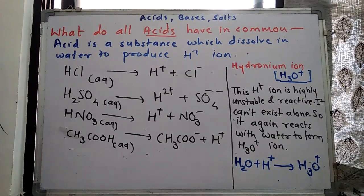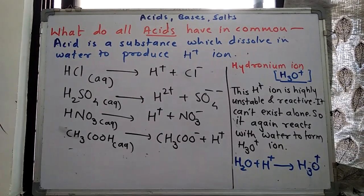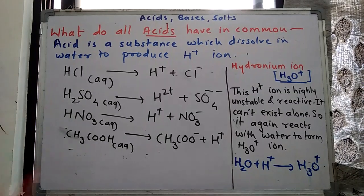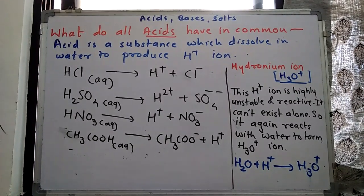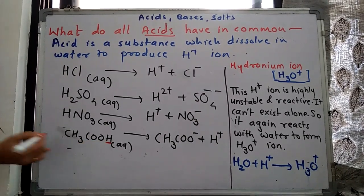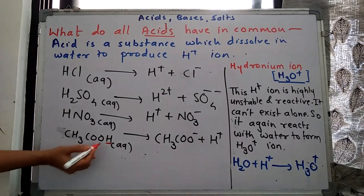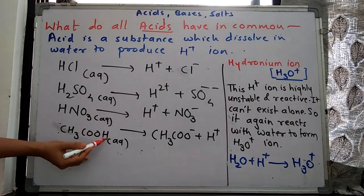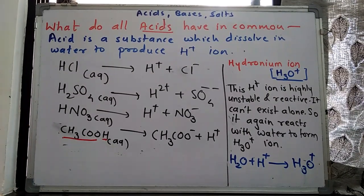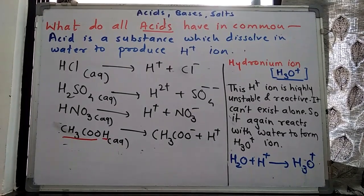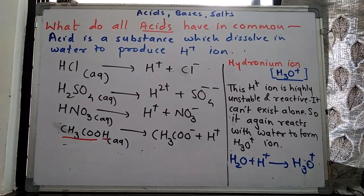CH3COOH — acetic acid — is a weak acid, while HCl, H2SO4, and HNO3 are strong acids. When acetic acid is added to water, it also produces H+ ions and a negatively charged ion. The H separates from CH3COOH, giving H+ and CH3COO−. So an acid is a substance which produces H+ ions when dissolved in water.